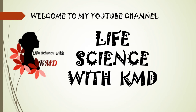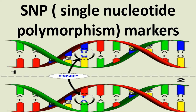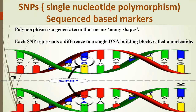Welcome to Life Science with KMD. Today I am going to explain about SNP markers, that is Single Nucleotide Polymorphism markers. Single Nucleotide Polymorphism comes under the type called sequence-based markers. Polymorphism is a generic term meaning 'many shapes.' Each Single Nucleotide Polymorphism represents a difference in a single DNA building block called nucleotides.